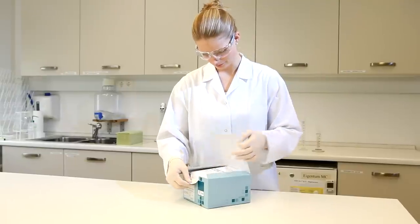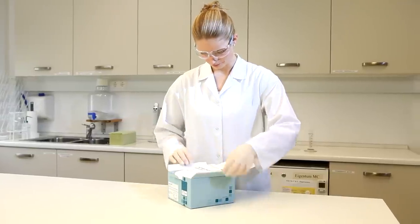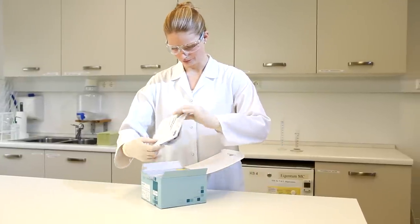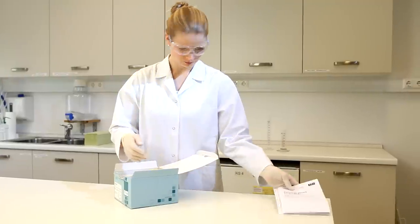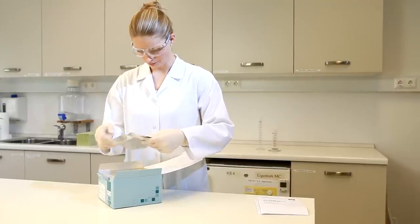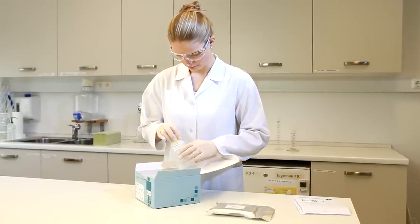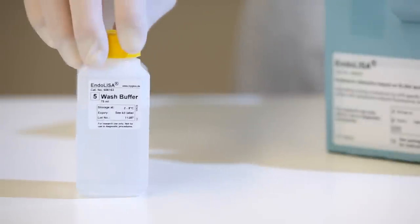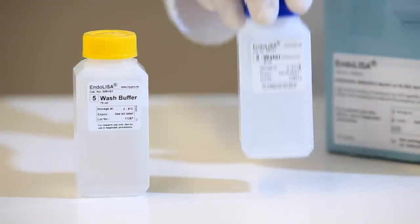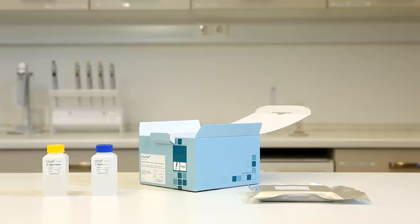Each EndoLISA kit contains reagents for 192 tests. The reagents are EndoLISA plates precoated with phage binding protein, wash buffer, endotoxin free water, endotoxin standard, assay buffer, enzyme recombinant factor C, substrate, binding buffer, and cover foils.